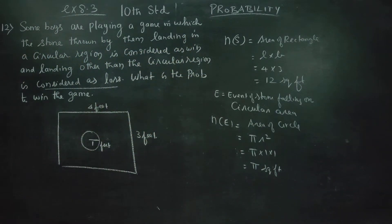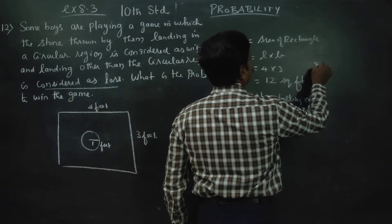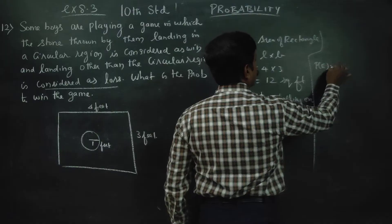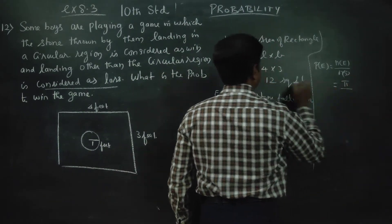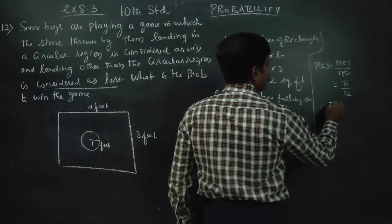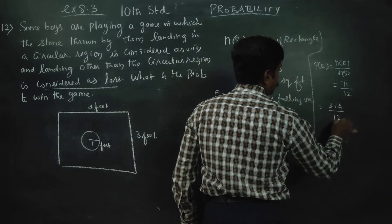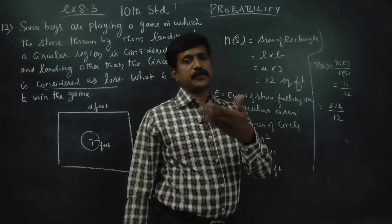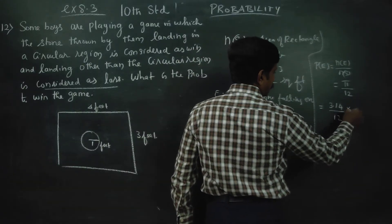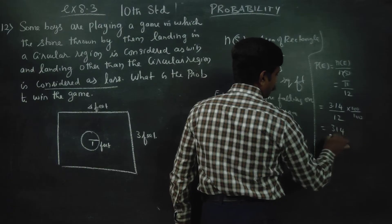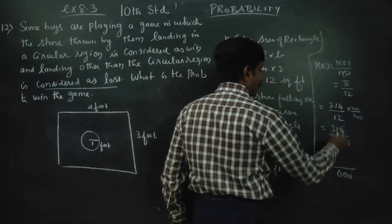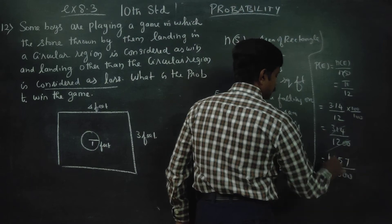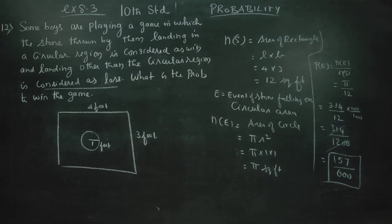n of S is ready, n of E is ready. The probability formula: P of E equals n of E by n of S, which is pi by 12. Pi is equal to 22 by 7, which is 3.14. So the answer is 157 by 600. That is your final answer.